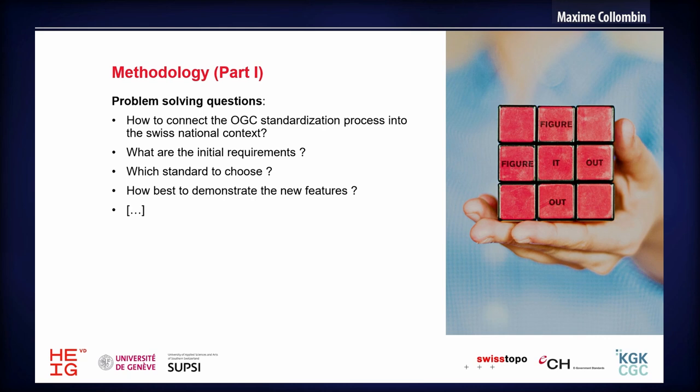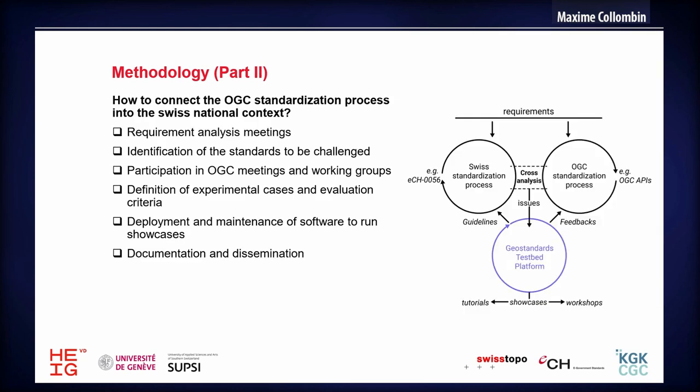What are the problem-solving questions? We first wanted to understand and figure out how we could connect the OGC standardization process to the process running in Switzerland. We wanted to define the initial requirements, the standards to choose, and how to demonstrate the interaction with these standards. So we tried to develop a kind of feedback loop process, linking the international and national standardization process with the OGC process, served by a GeoStandard platform.